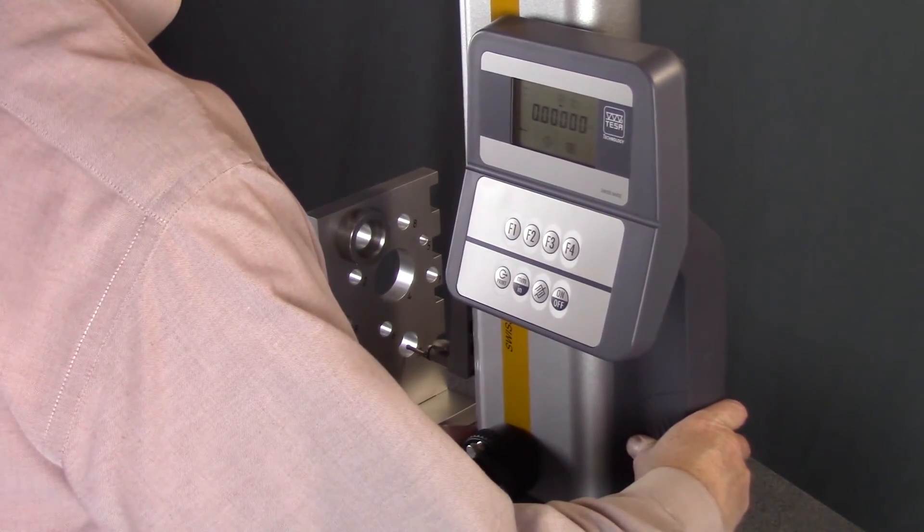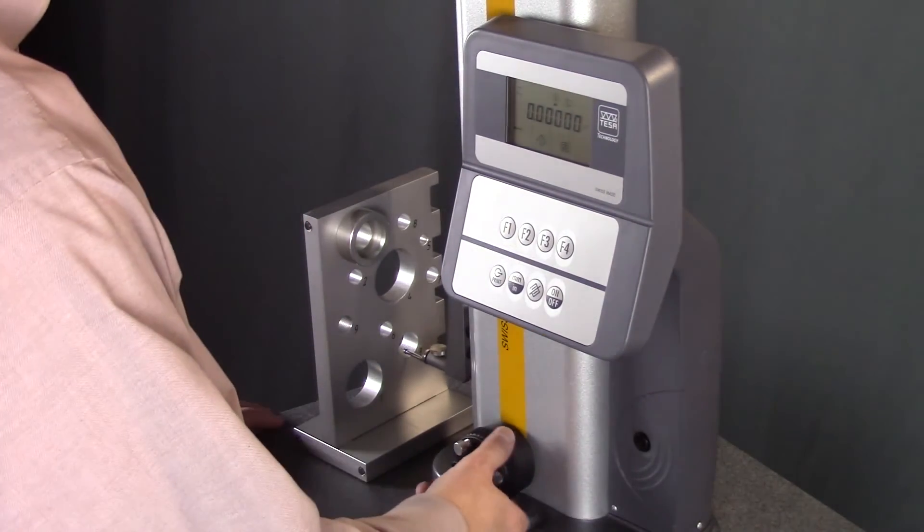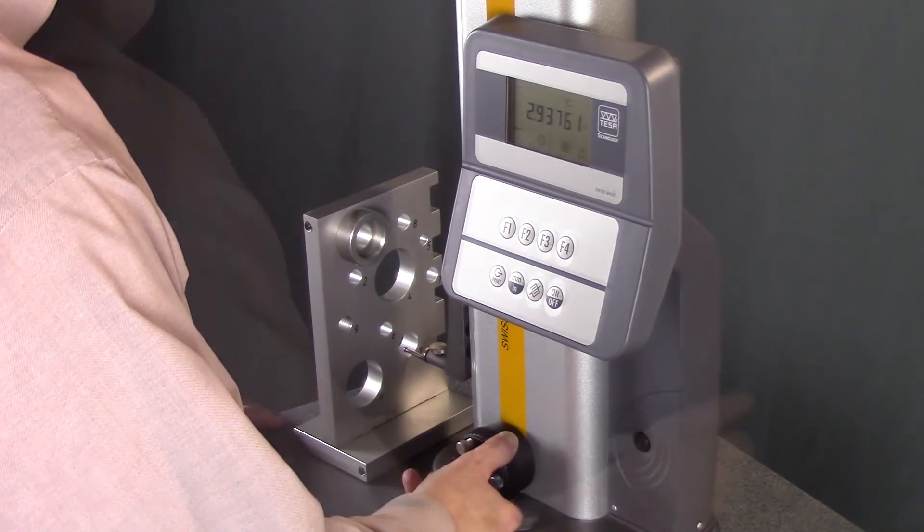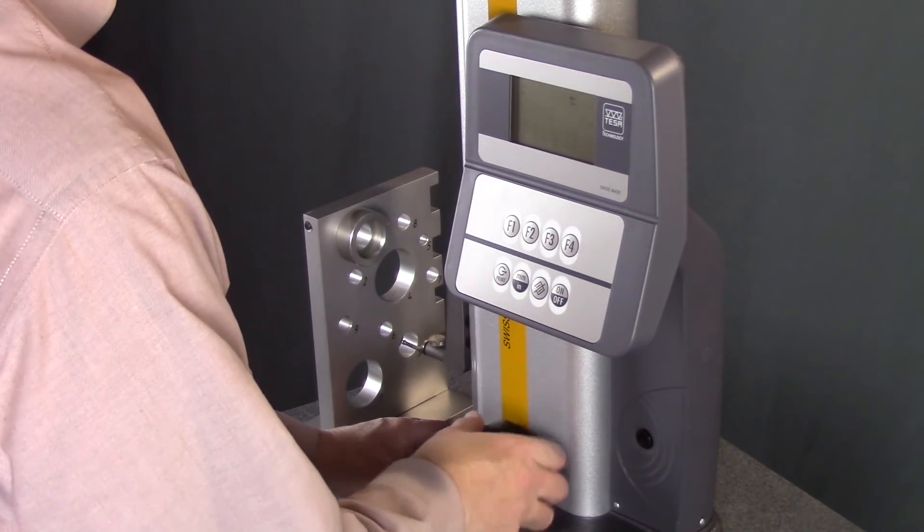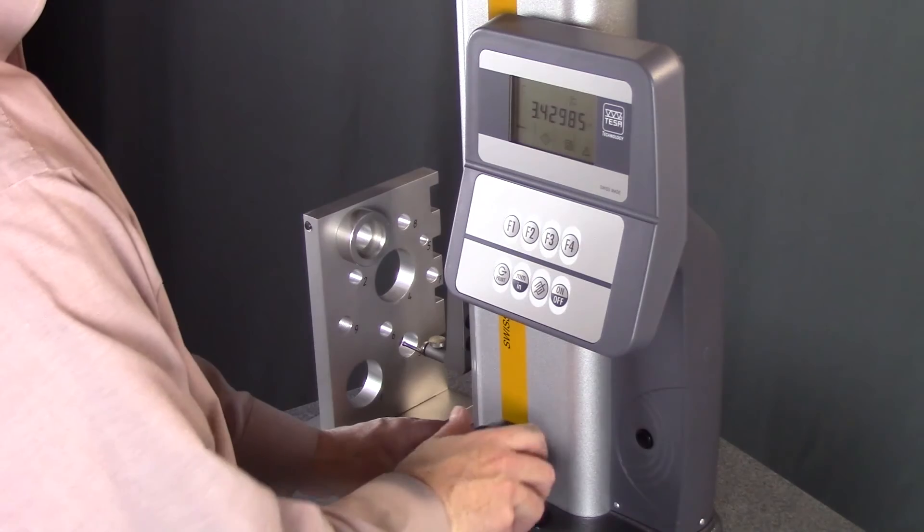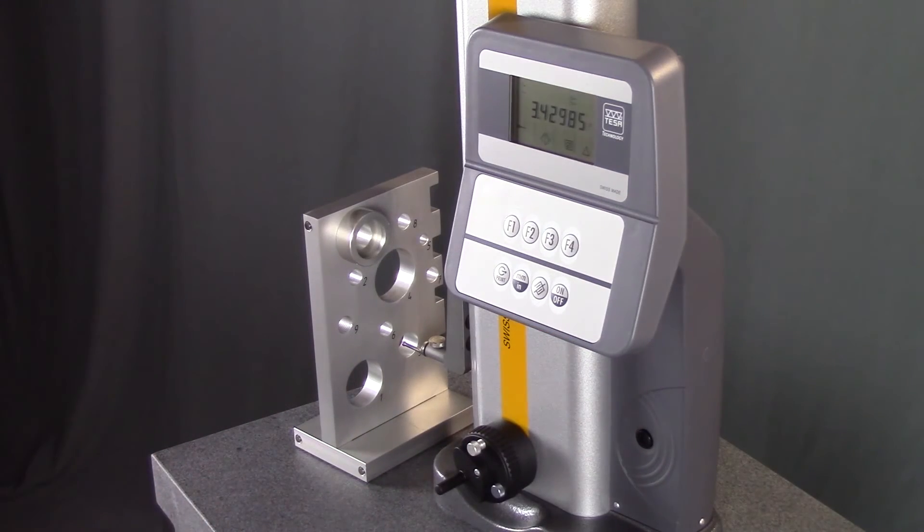Measured results are displayed by making probe contact two times. This allows you to measure the distance between your datum and a specific point, or determine the distance between your datum and the center line of this bore.